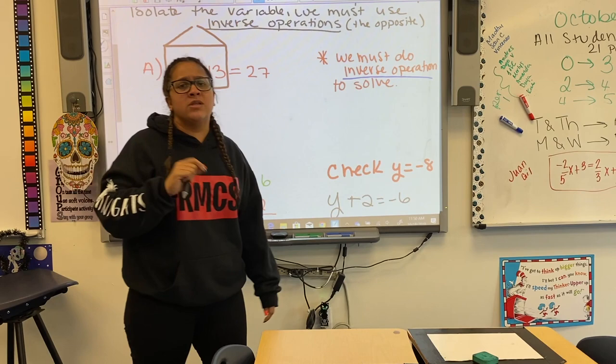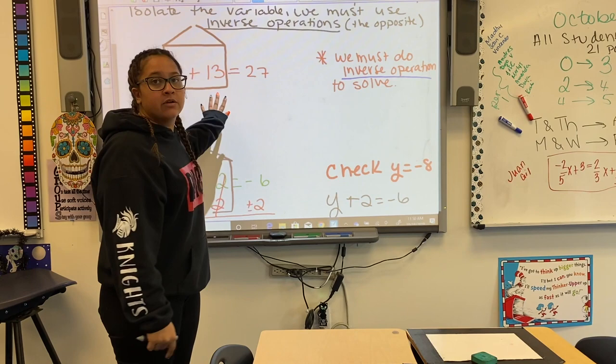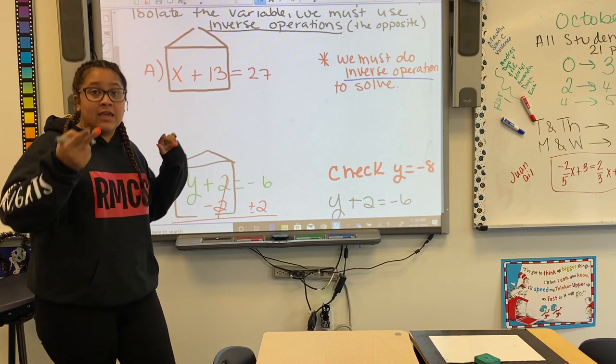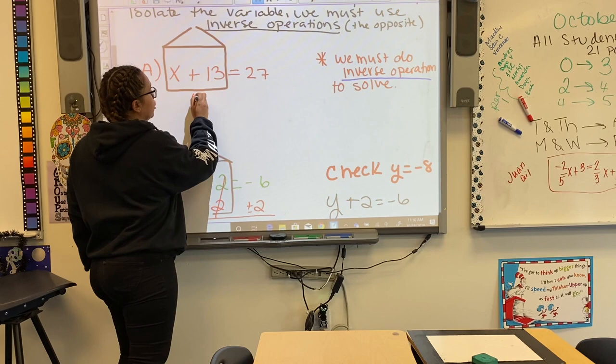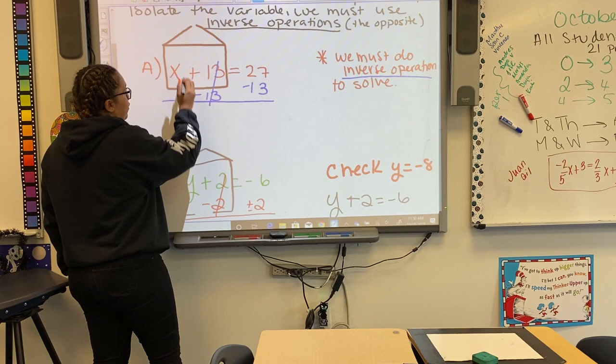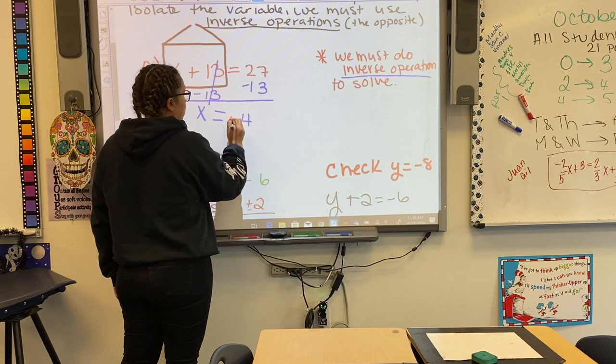What is an inverse operation? The opposite. So we just have to do the opposite of what's happening. Since we want to take the 13 out, and this is positive 13 — it's adding — the inverse operation is negative 13, subtracting. So we're going to go minus 13, and that goes away, but the 13 can't just go into thin air, it has to go somewhere. So we take it to the other side of the equal sign, and we get x equals 27 minus 13, which is 14.